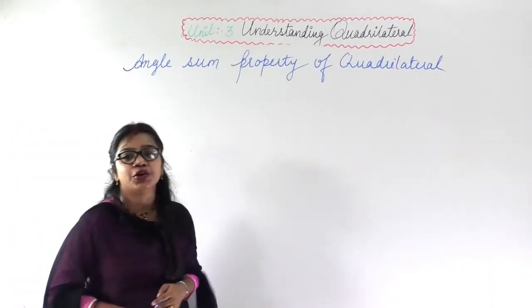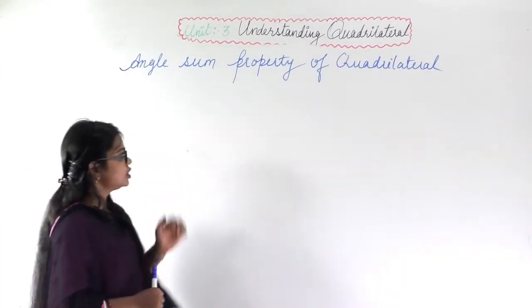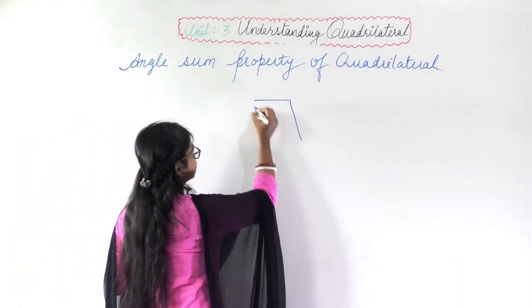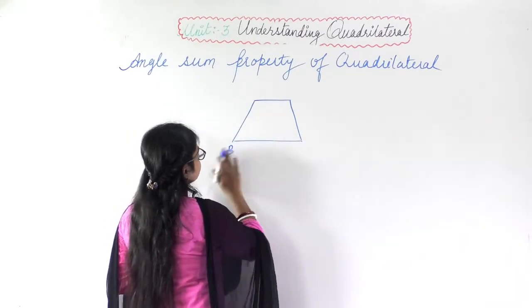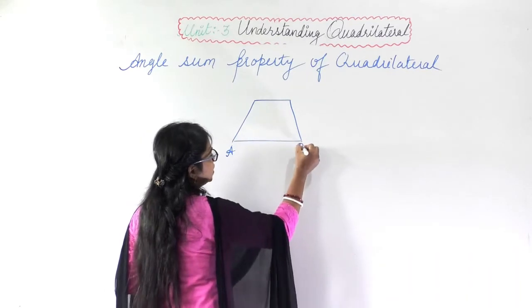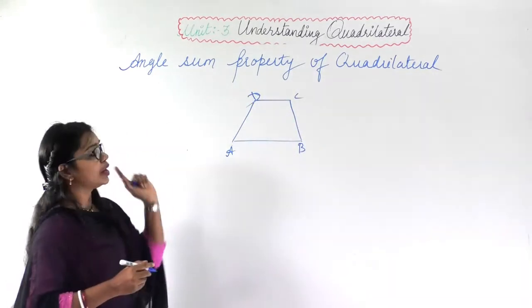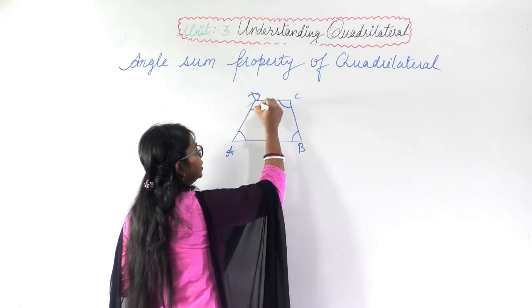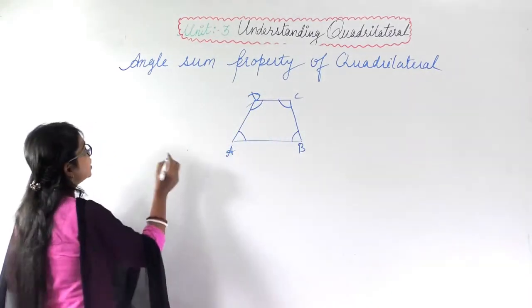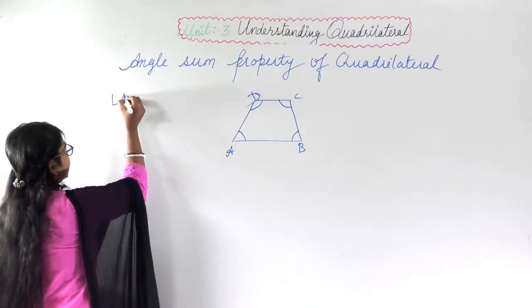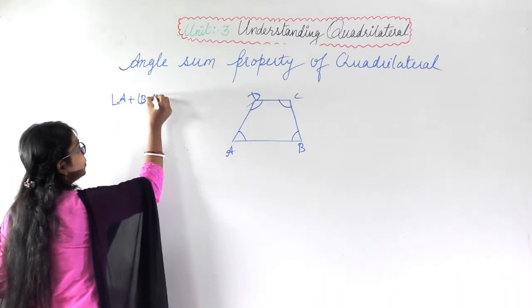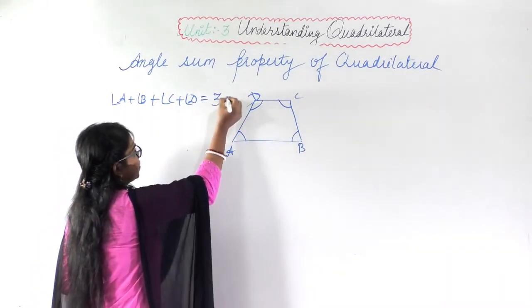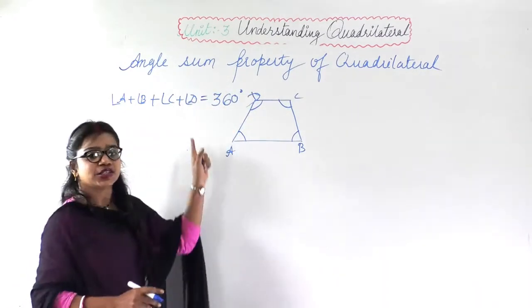In the previous video, we studied the angle sum property of a quadrilateral, where I proved the theorem. You can watch from the previous video. In this theorem, for a quadrilateral ABCD, the sum of all angles — angle A, angle B, angle C, and angle D — will be equal to 360 degrees.